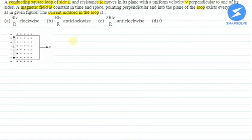So this question has a figure given which is a conducting square loop of side L and resistance R, which has velocity V perpendicular to its side, which means it moves. Now, the magnetic field here is constant, there is no change. Pointing perpendicular and into the plane of the loop. This is perpendicular and into the plane of the loop, and in this figure in every direction, this magnetic field exists.